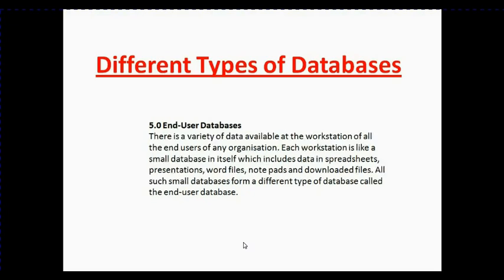The fifth type is the end user database. This is mainly found on workstations. Every end user works with workstations — they may not know where the database is going, but it includes things like notepad files, downloaded files, and small data from different types of databases. You are also known as the end user in database contexts.